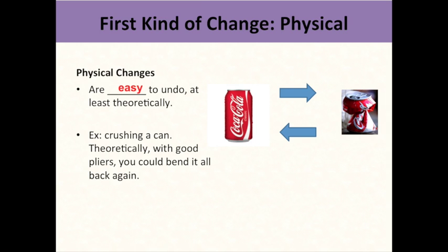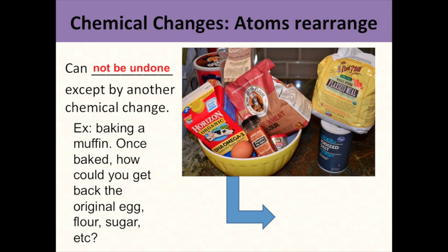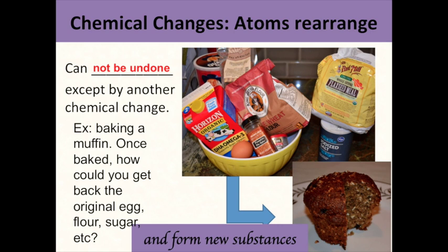But chemical changes cannot be undone except by another chemical change. For example, if you were going to bake a muffin, here's all your ingredients — you put them together and bake them and they undergo a chemical reaction. How could you get back the original egg, flour, and sugar? After the atoms rearrange, you can't do it. You form new substances when atoms rearrange and you get this muffin. So that's a chemical change.